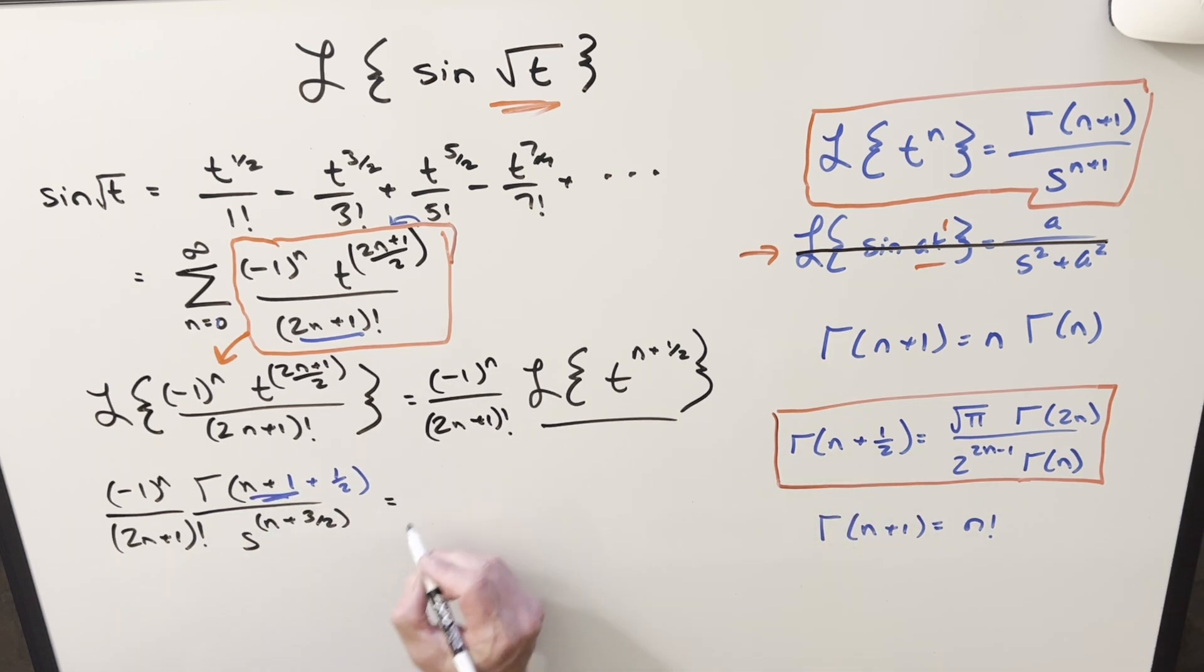So using this, copying everything down, you'll see now we're kind of making a bigger mess. So it looks like we're going in the wrong direction, but it's really going to allow us to get all the cancellation and simplification we need. So plugging in over here, actually, let me copy down this part too. So we have s to the n plus 3 halves here.